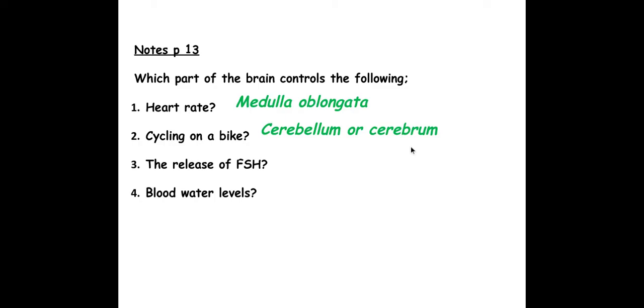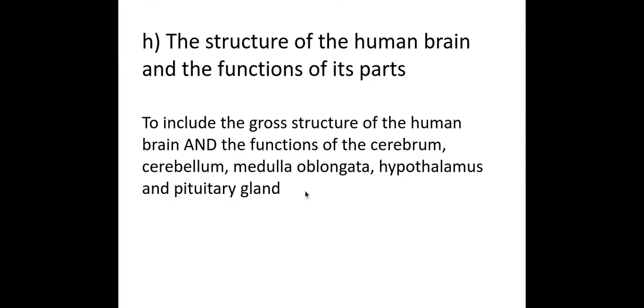The release of FSH is the pituitary gland, and blood water levels is in the hypothalamus. So make sure you know those bits in red from the mark scheme from that image there, and make sure you know what each part of the brain does, each one of these five functions.